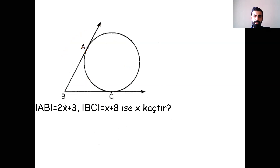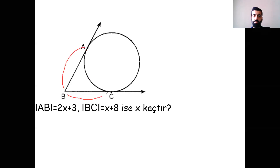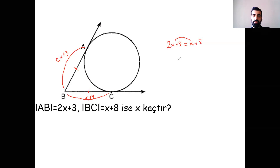Evet, bakalım hemen. Demiş ki AB = 2X + 3, BC = X + 8. Hemen basit özelliğimizi kullandık: tanjant kolları birbirine eşit olmak zorunda. 2X + 3 = X + 8. X'i bu tarafa aldık: X = 5.